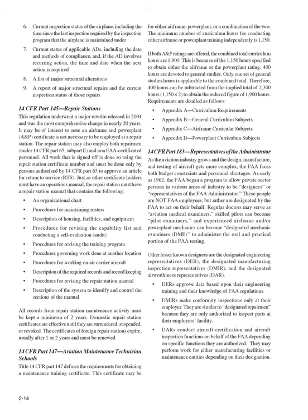14 CFR Part 147, Aviation Maintenance Technician Schools. This defines the requirements for obtaining a maintenance training certificate for airframe, power plant, or a combination. The minimum number of curriculum hours for either airframe or power plant training independently is 1,150. If both A and P ratings are offered, the combined total curriculum hours are 1,900, because 400 hours devoted to general studies need only be counted once, allowing 400 hours to be subtracted from the implied total of 2,300 hours.